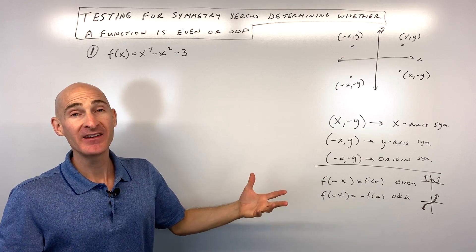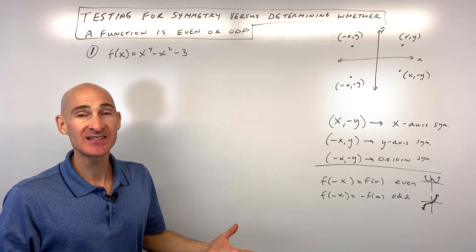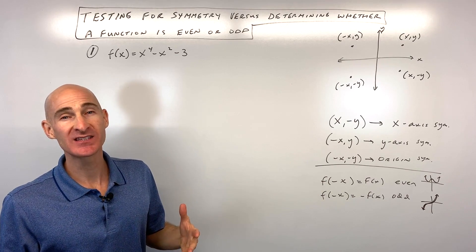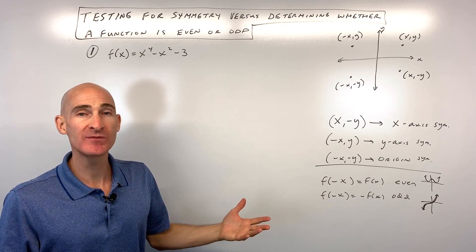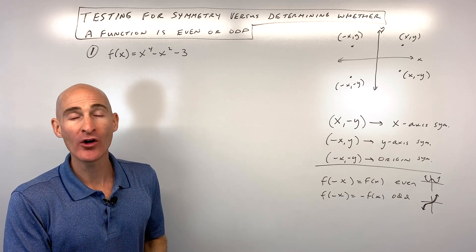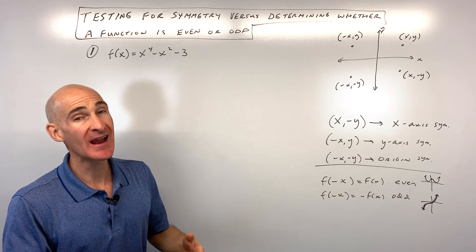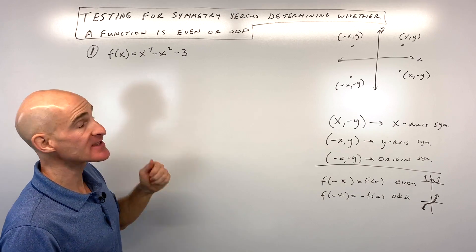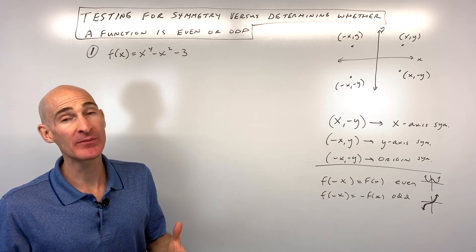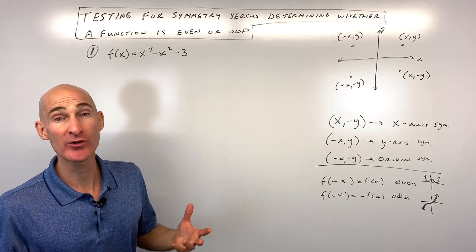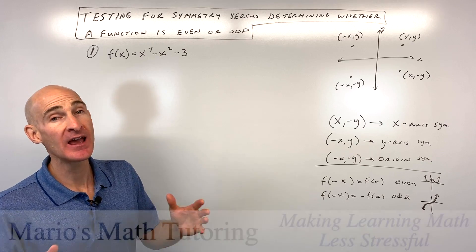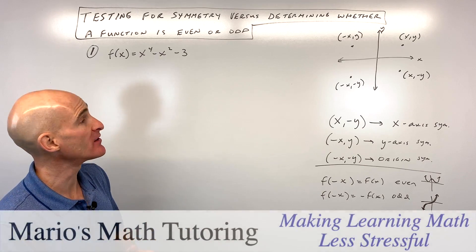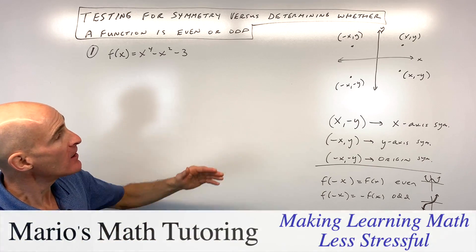Even, odd, x-axis symmetry, y-axis symmetry, origin symmetry — what do all these terms mean and how can we tell if a function has a particular type of symmetry, or whether it's even or odd? That's what we're going to talk about in this video.